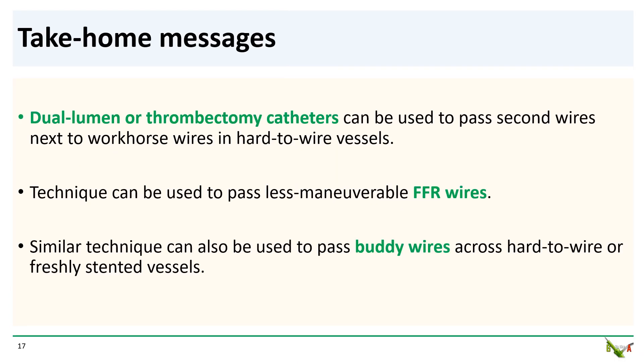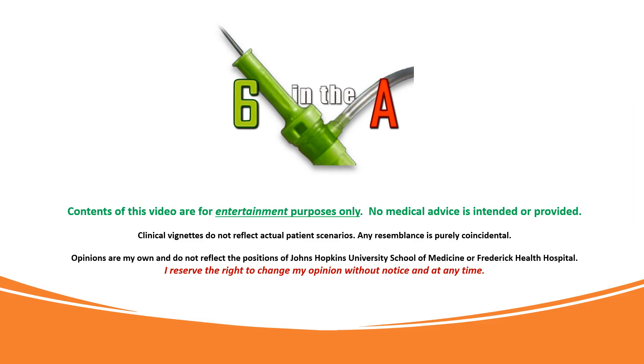Take-home messages: dual-lumen catheters, or the poor man's version — thrombectomy catheters — can be very useful to pass second wires next to workhorse wires in hard-to-wire vessels. The technique can be used to pass FFR wires across tough vessels that you've been able to wire with your workhorse. Similar techniques can be used to pass buddy wires across hard-to-wire lesions, and it can also be useful to pass additional wires across freshly stented vessels. Thank you for watching.